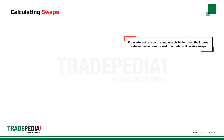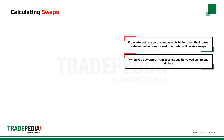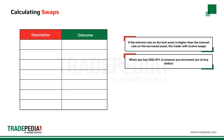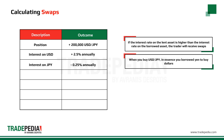If the interest rate on the lent asset is higher than the interest rate on the borrowed asset, the trader will receive swaps. When you buy US dollar against Japanese yen, in essence you borrowed yen to buy dollars. If we assume that the interest rates in Japan are 0.25% and 2.5% in the USA, the trader will earn 2.5% per year on his $200,000 US dollars and will pay 0.25% per year on the Japanese yen.